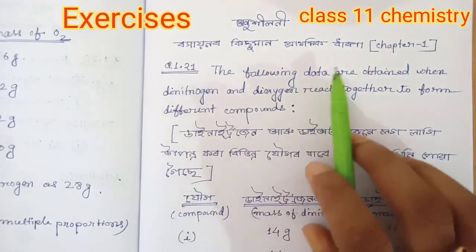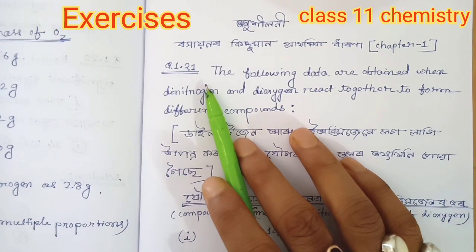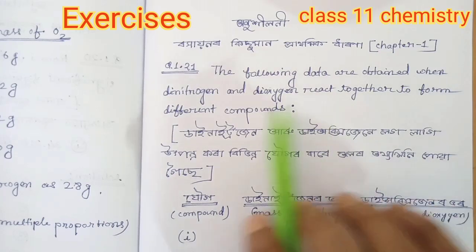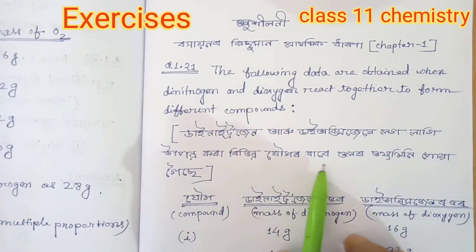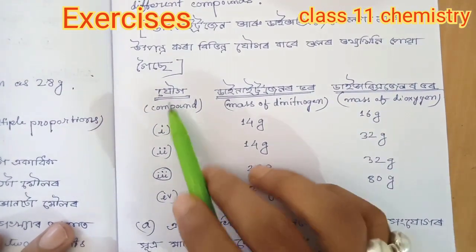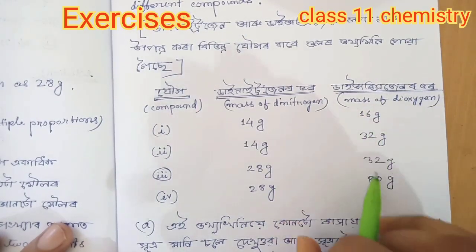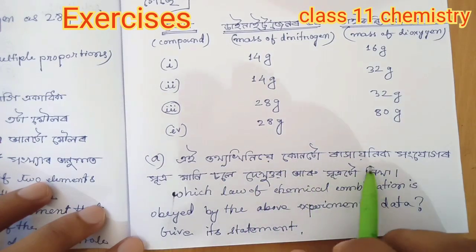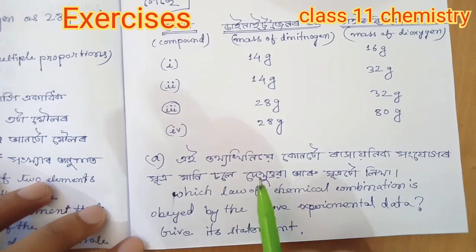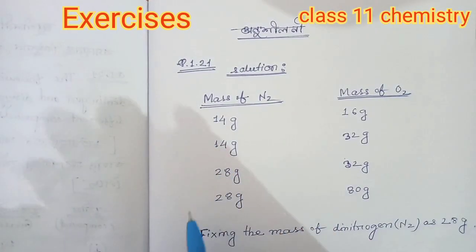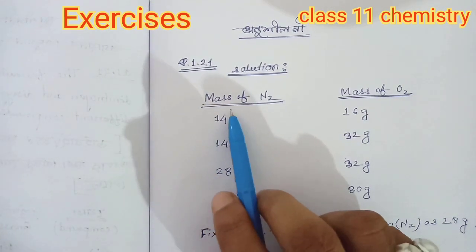Hello everyone, today I am going to show you the following data obtained when dinitrogen and dioxygen react together to form different compounds. Dinitrogen and dioxygen are involved in the law of chemical combination.